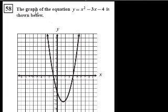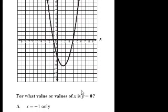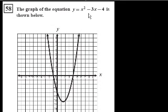We're on problem 58. The graph of the equation y equals x squared minus 3x minus 4 is shown below. For what value or values of x is y equal to 0? So what they're essentially saying is when does this equal 0? They want to know when does y equal 0, so what values of x does that happen?